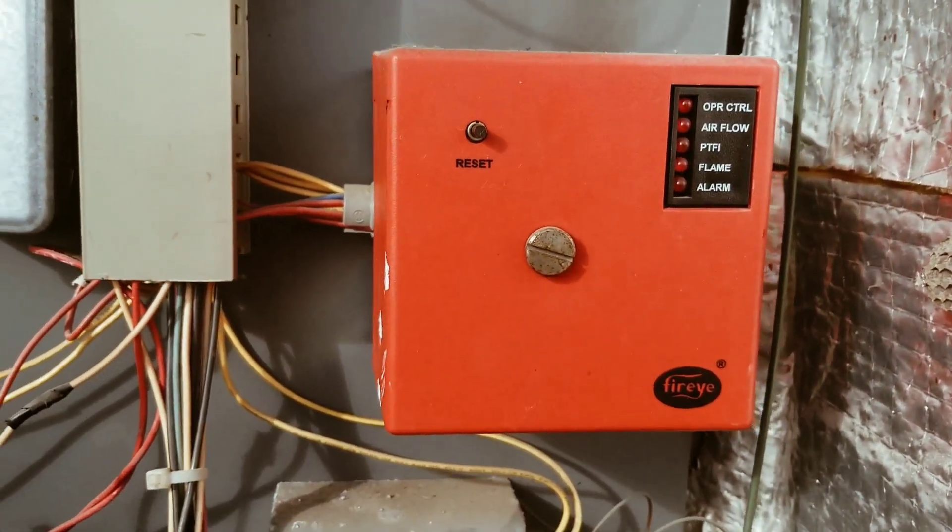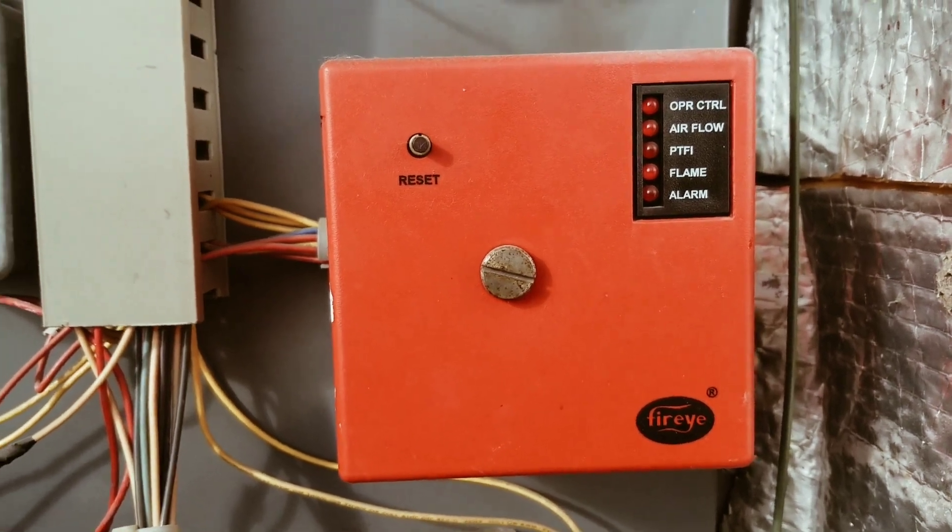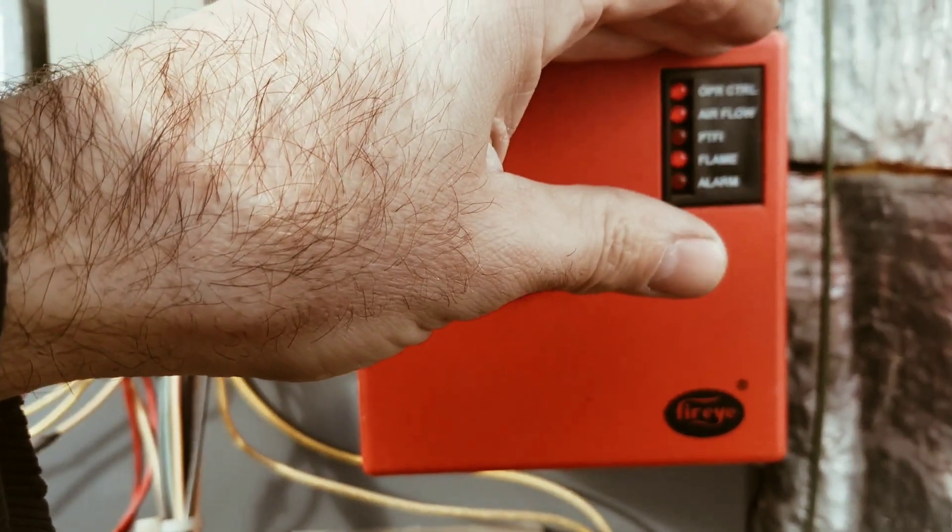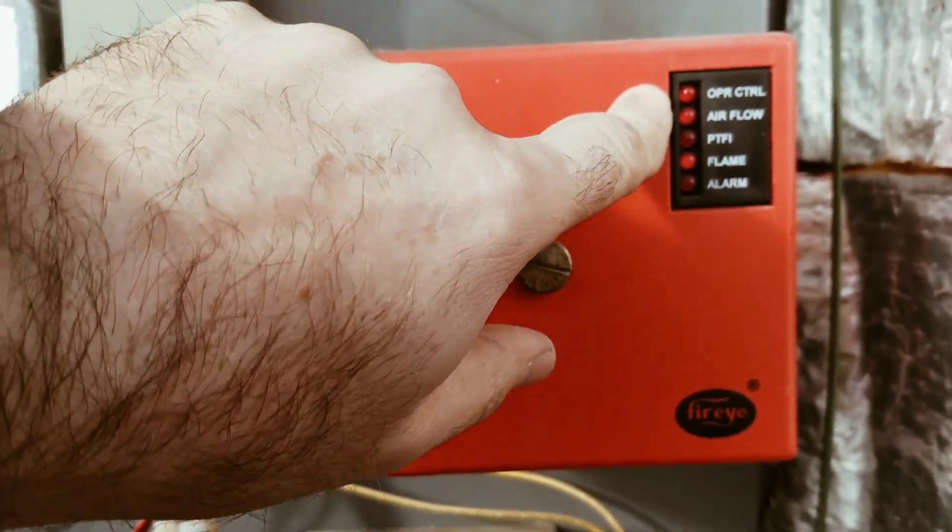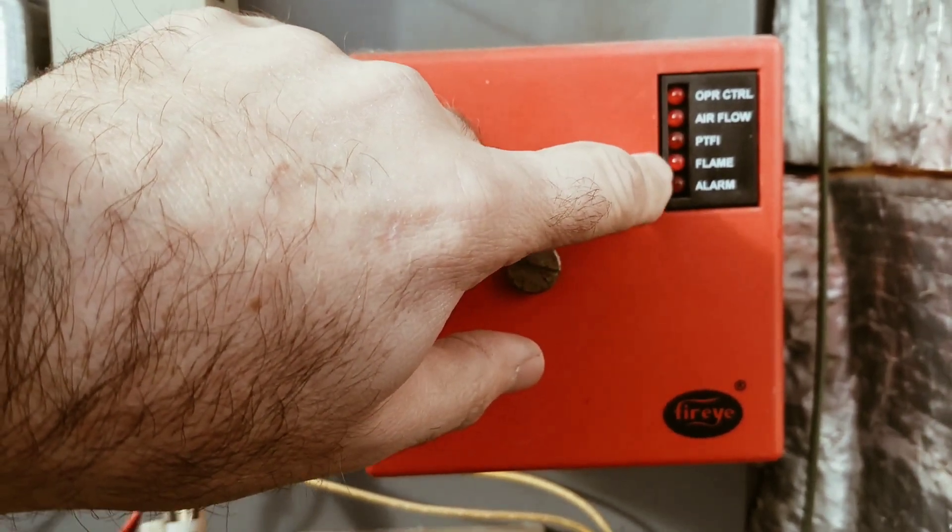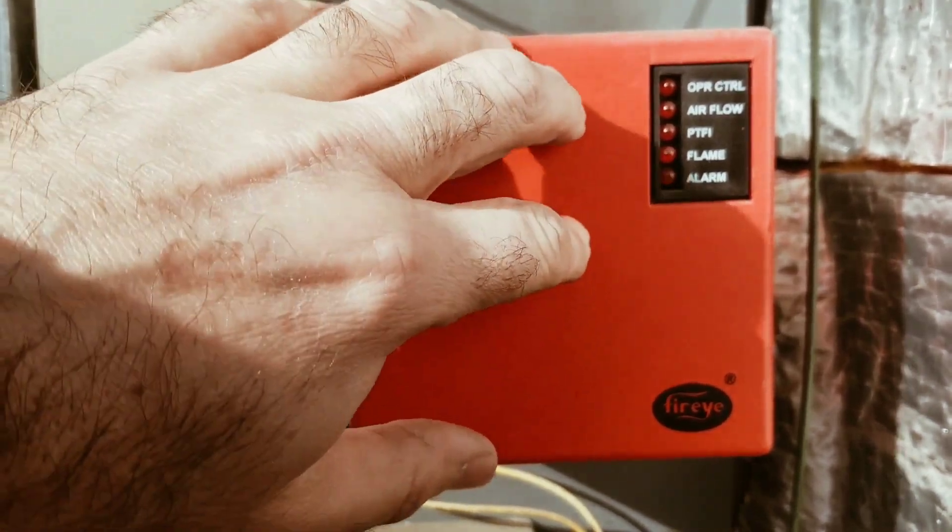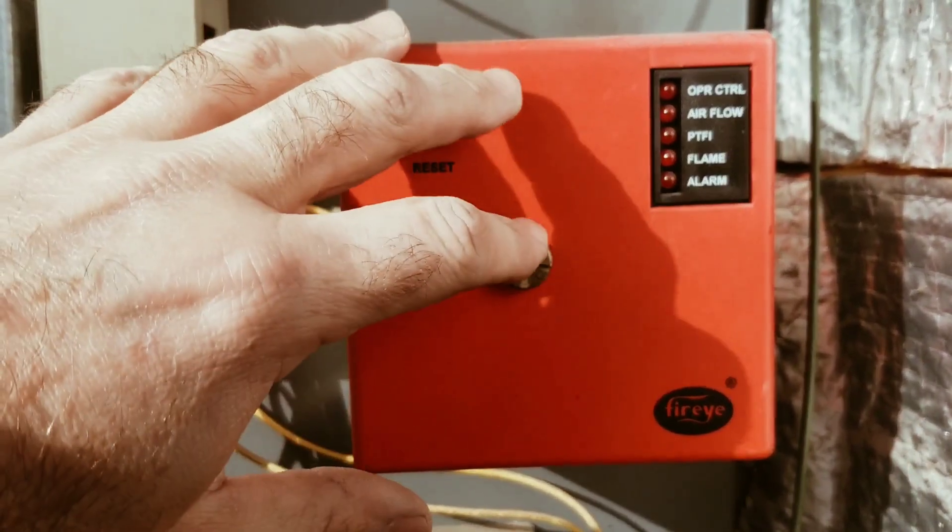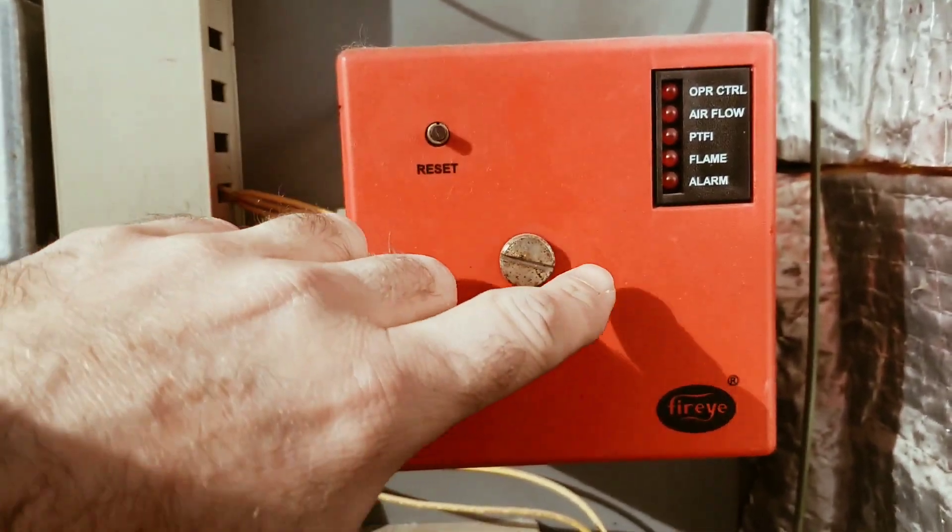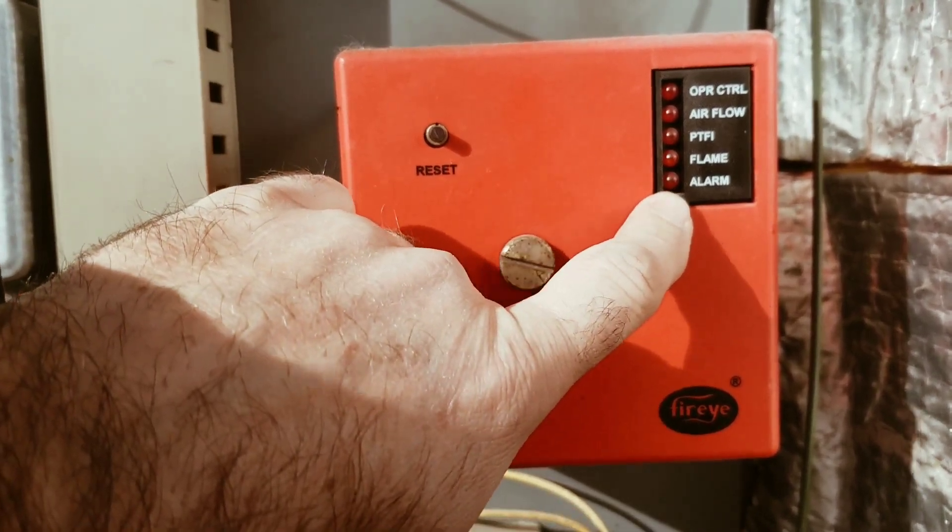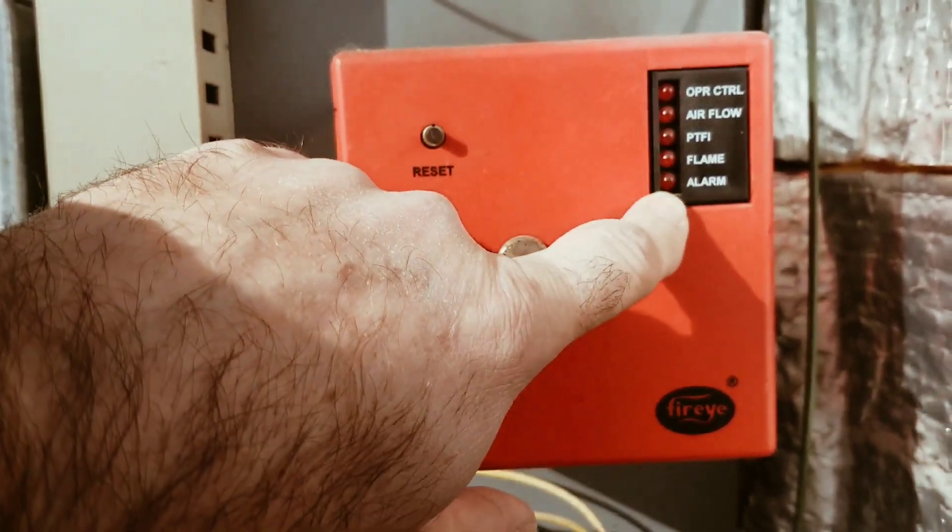Here we have our FireEye burner control. We have some lights on it now. The operating control, air flow and flame. If we were to shut the gas off and just tried to fire and we couldn't have the flame rectification take place with the flame rod, it would lock itself out and this alarm light would come on.